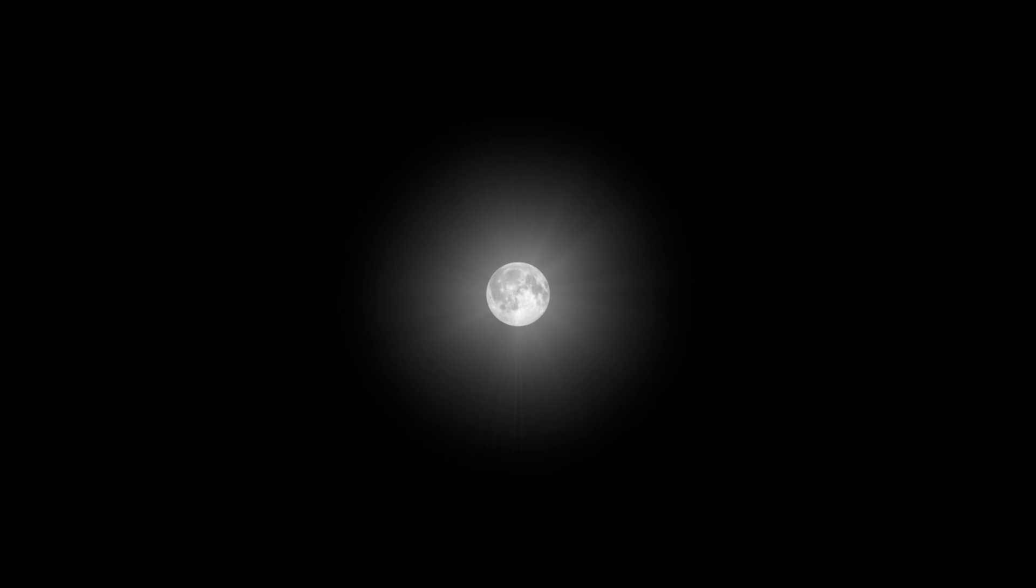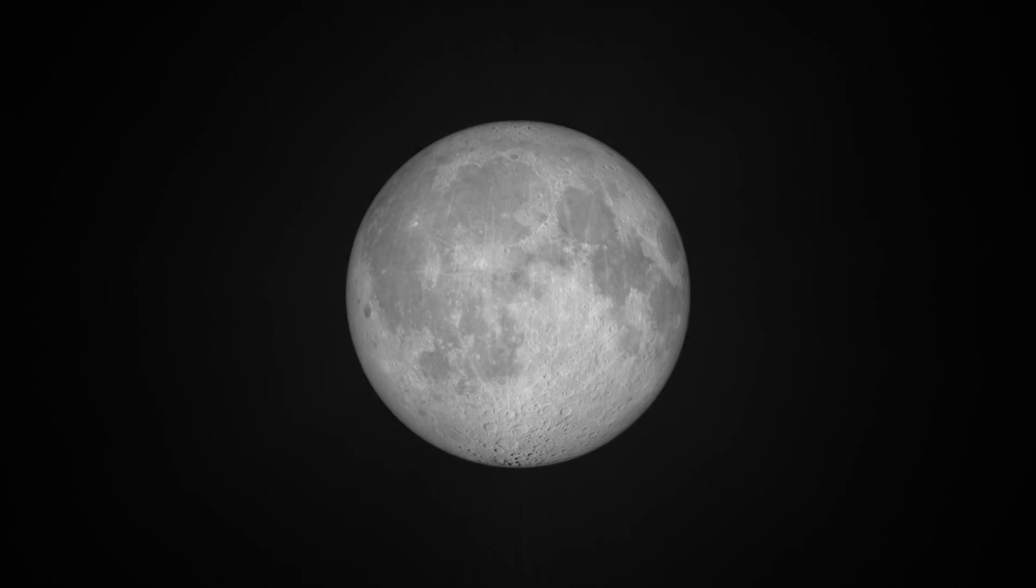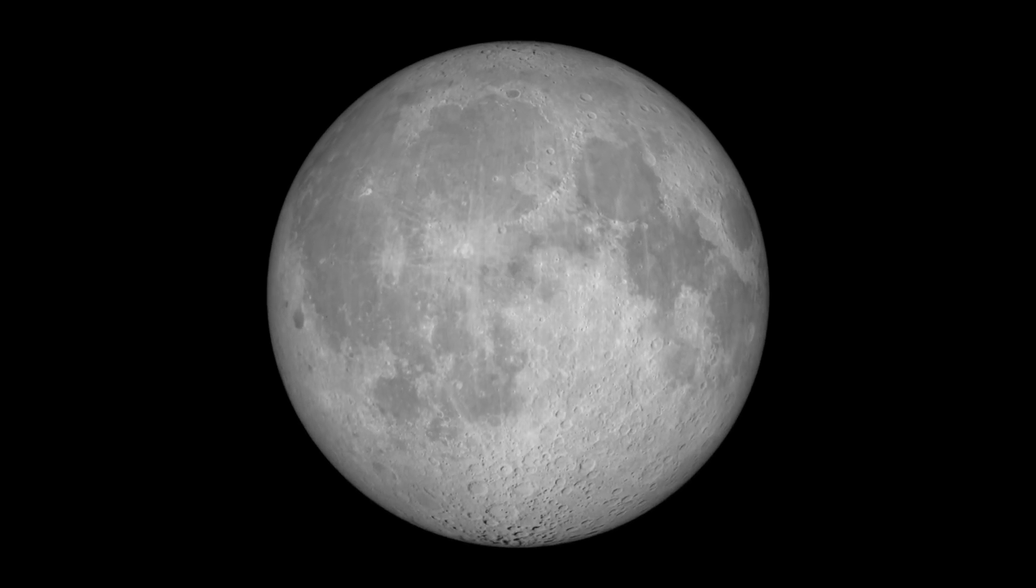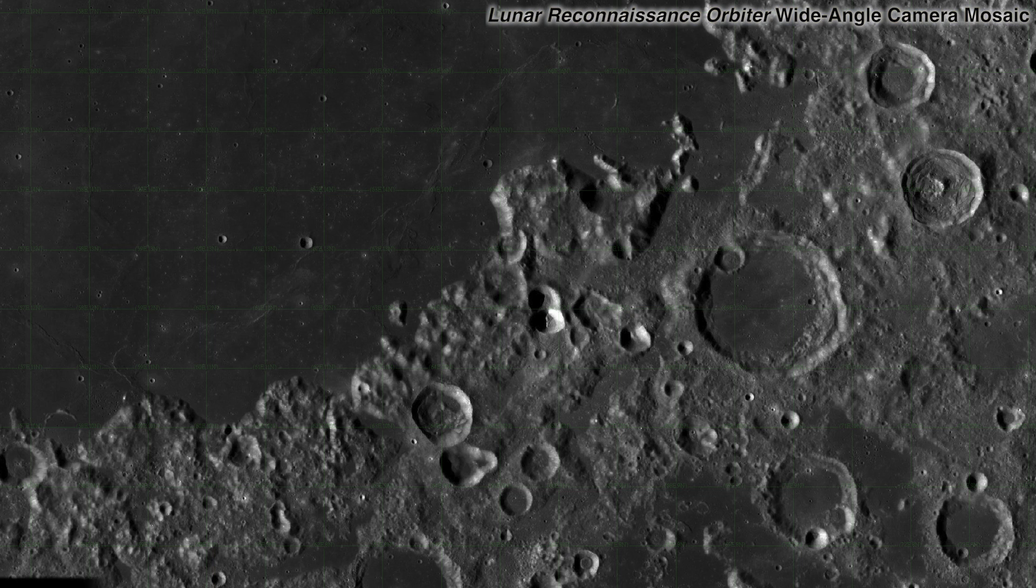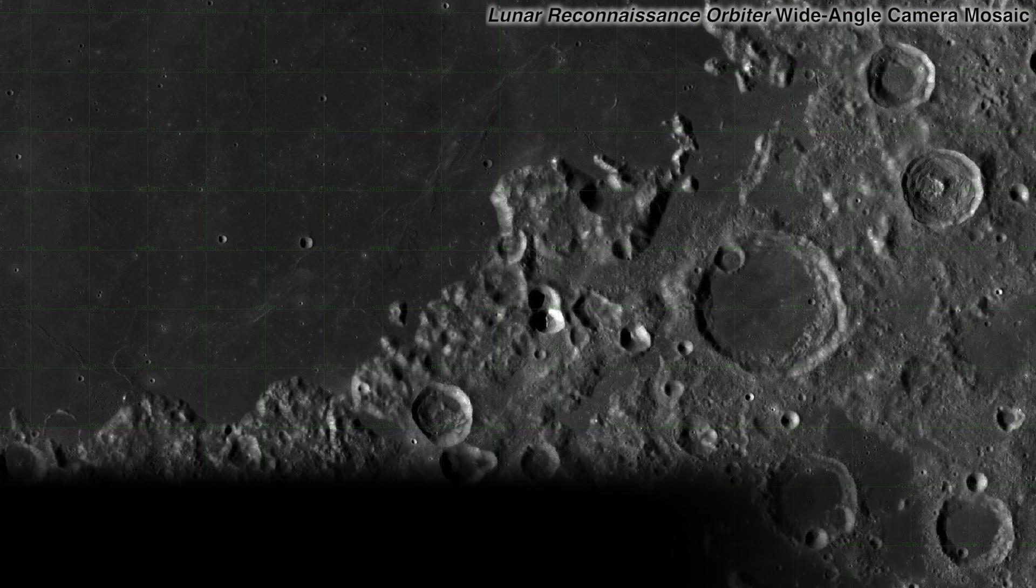Impacts form when an extraplanetary object strikes the surface of a body, releasing enough energy in the process to excavate a large hole, and we see literally millions of these across the moon. These are approximately random events, both with respect to time and location on the body.